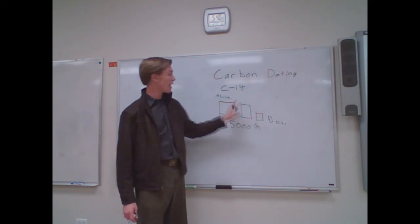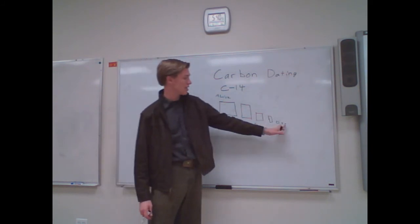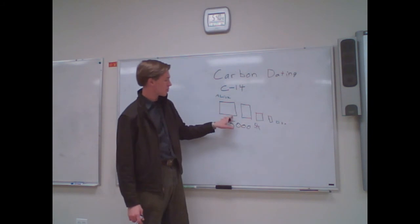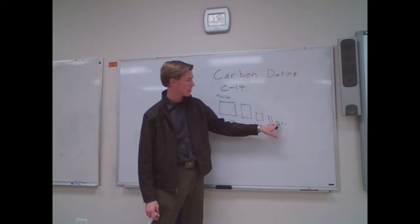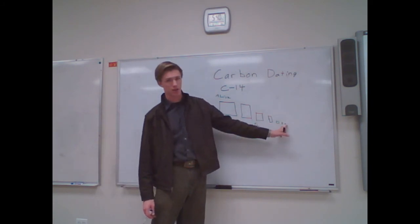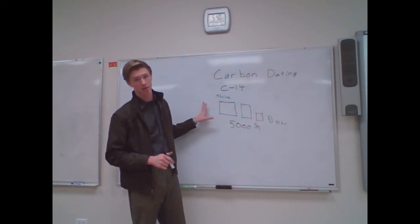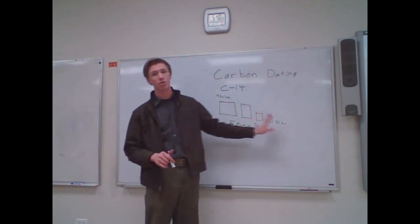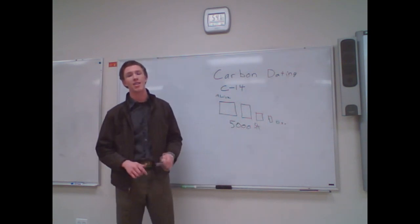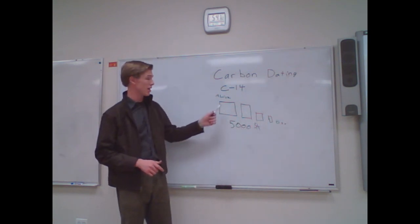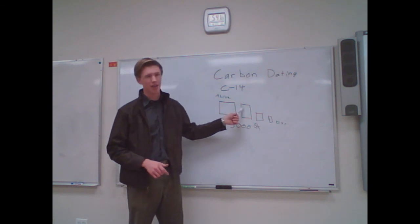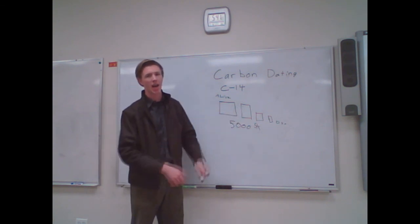But if I find that dead thing, and it only has this much carbon in it, I know that it's been dead for 5,000, 10,000, 15,000, 20,000, 25,000, 30,000 years, because it has a very little bit of carbon-14 in it. So scientists can find something that was alive, measure how much carbon-14 is in it, and that is radioactive dating, because carbon-14, kind of like an ice cube, melts away half at a time.